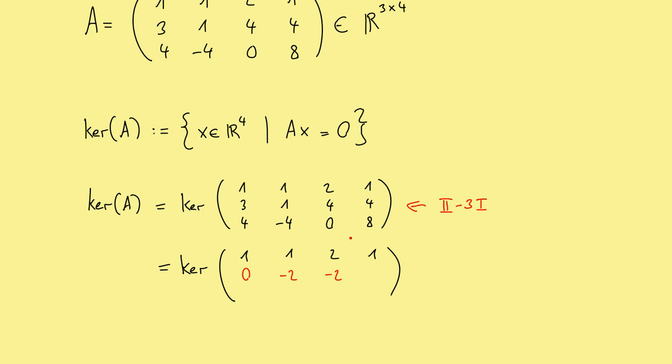Then we do the same for the third row. So third row minus 4 times the first row, and then we have the 0 as wanted and minus 8, so minus 4 minus 4 and minus 8 as well and plus 4 here. Okay, now we have the zeros in the first column.